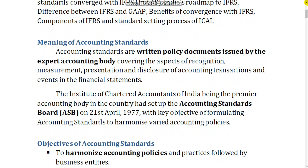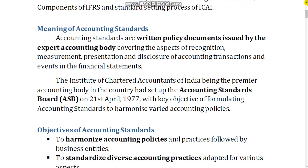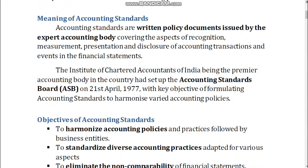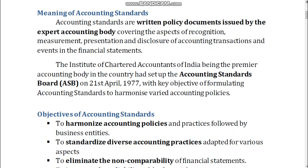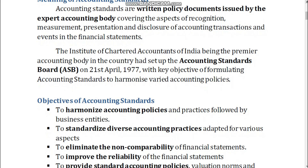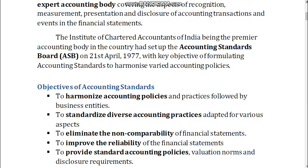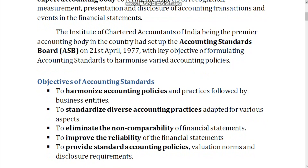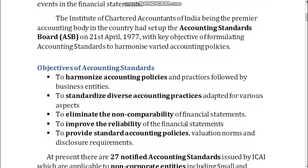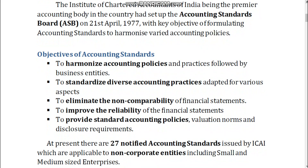Meaning of Accounting Standards. Accounting standards are written policy documents issued by the expert accounting body covering the aspects of recognition, measurement, presentation, and disclosure of accounting transactions and events in the financial statements. The Institute of Chartered Accountants of India, being the premier accounting body in the country, set up the Accounting Standards Board, ASB, on April 21, 1977, with the key objective of formulating accounting standards to harmonize varied accounting policies.